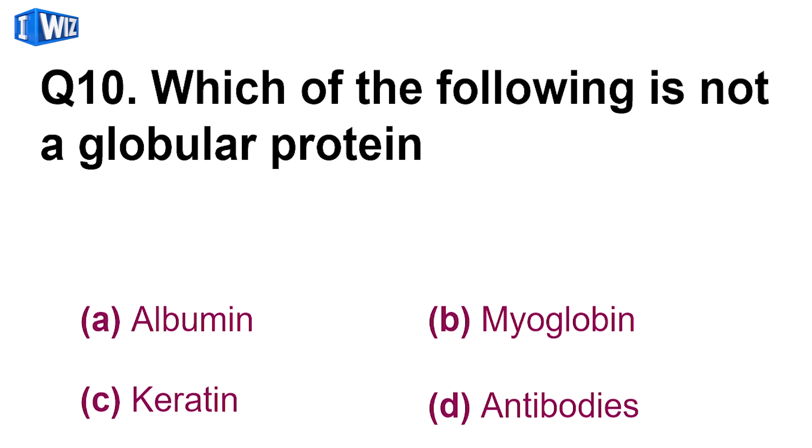Next, which of the following is not a globular protein? Globular protein wo hooti hai, jo spherical hooti hai in shape, aur water soluble hooti hai. In me se keratin globular protein nahi hai, kiunki wo water insoluble hai, aur wo globular nahi hooti, spherical nahi hooti hai. Linear hooti hai.